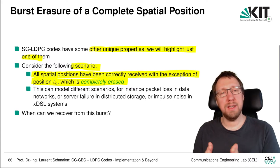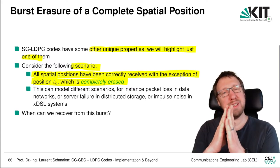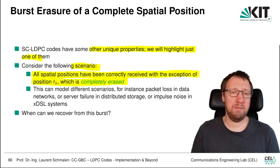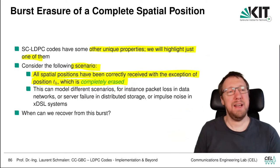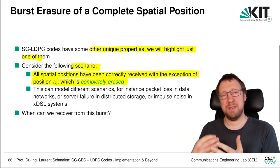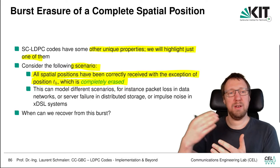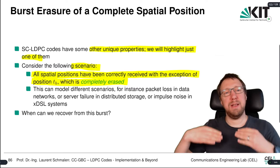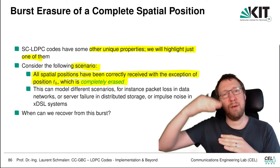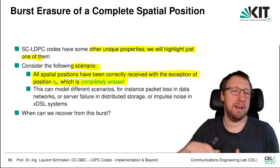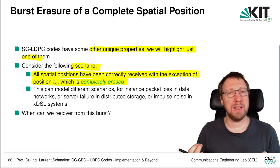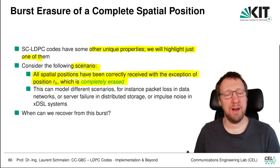What originally motivated us to study this is DSL systems — digital subscriber lines, the internet over twisted pair copper lines at home. There you have so-called impulse noise: noise that is impulsive, and over a short sequence of time there's a very high noise level. Usually it's caused by switching on an electrical appliance. This is noise seen in the twisted pair line, and for a short period of time we have very high noise power, which essentially erases a complete spatial position. The question is: when can we recover from this burst?